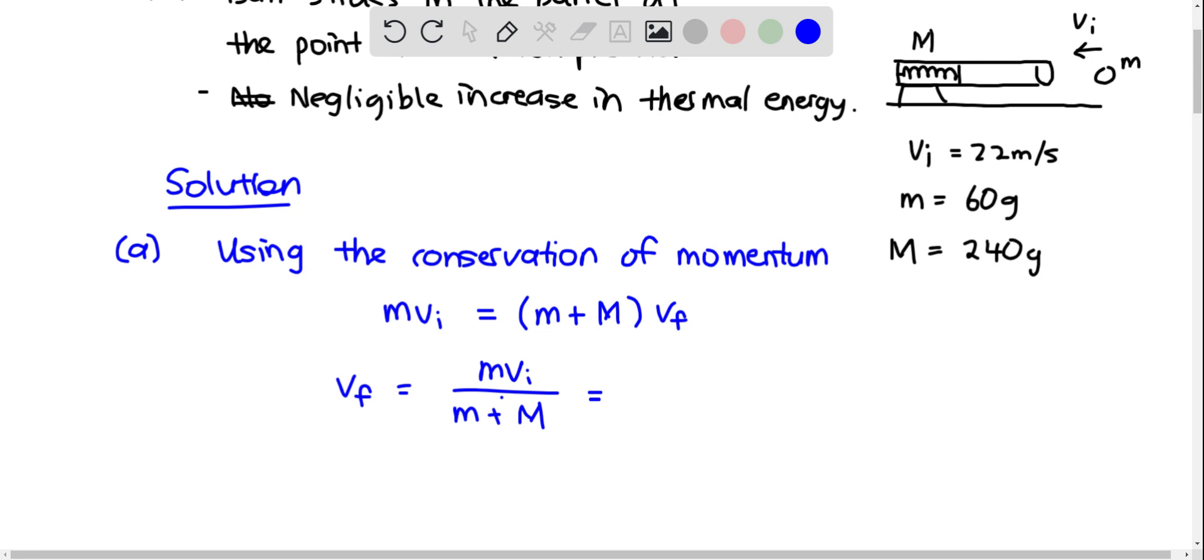Put in the numbers, and then we calculate this, you get 4.4 meters per second. So this is the answer for part A.